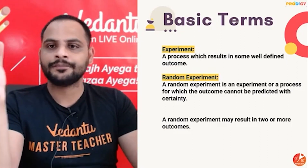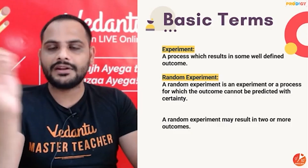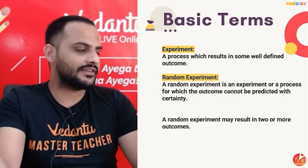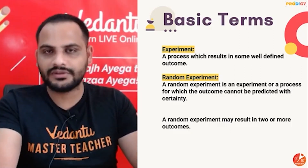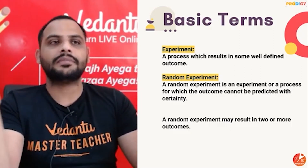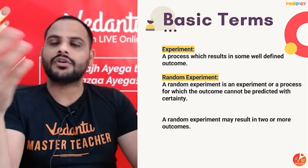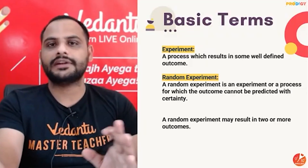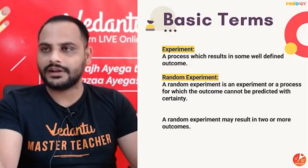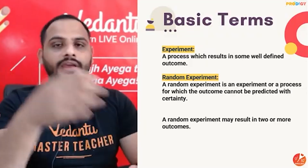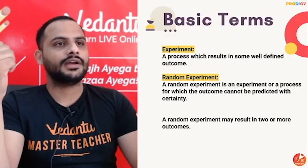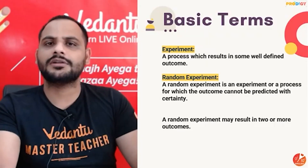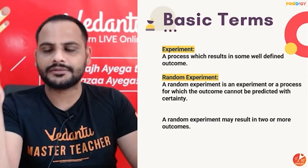Some terms which we need to understand first. An experiment is any process which will have some outcomes. For example, tossing a coin — when you toss a coin you get different outcomes: head or tail. Throwing a dice, picking a ball — any activity you're doing can be termed as an experiment.